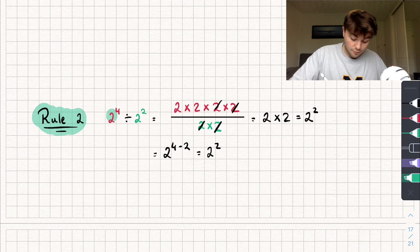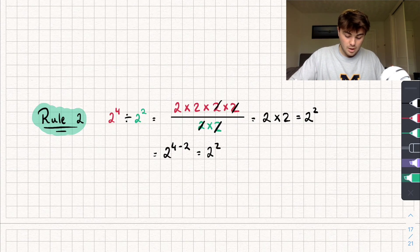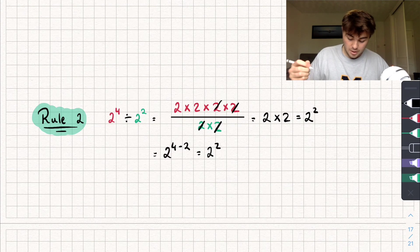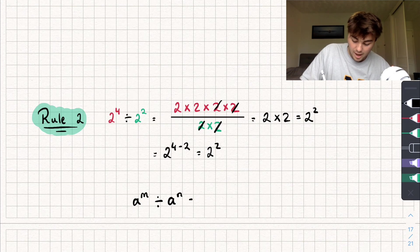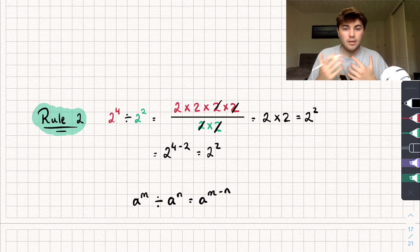Again, this only works if our base is the same — in that example, the base was 2. The general rule is: A to the power of M divided by A to the power of N equals A to the power of M minus N.